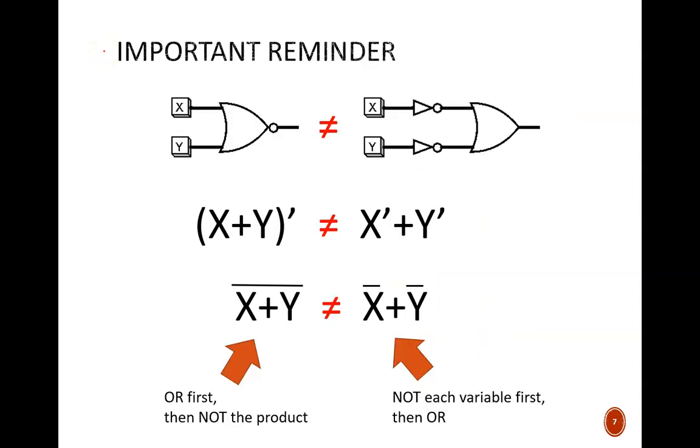The next few slides will discuss non-standard forms. But before we get there, an important reminder: X or Y' is not the same thing as X' or Y'. Three different ways I show how these statements are not equivalent. On the left side, the logic says to OR first, NOT later. On the right side, the logic says to NOT each variable first, then OR later. Keep this in mind as we begin drawing.